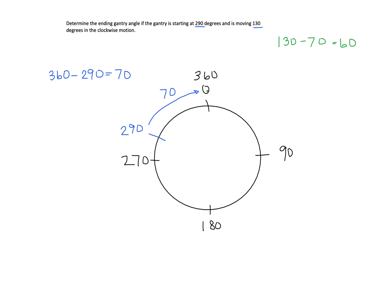That means from 0, the gantry is going to move another 60 degrees to get to its ending angle. Now after 0, this is pretty simple because we just are adding numbers from this point on. So our ending gantry angle here is going to be 60.